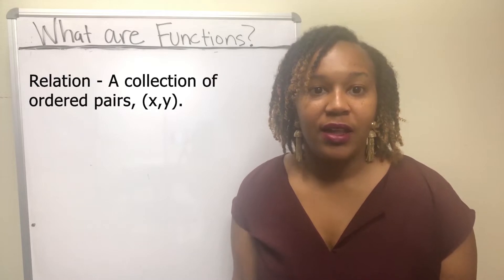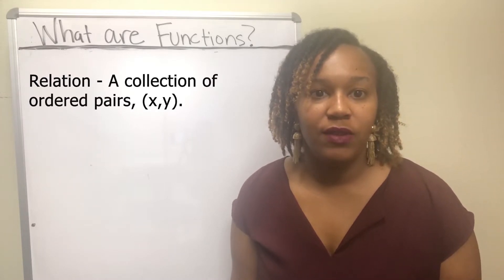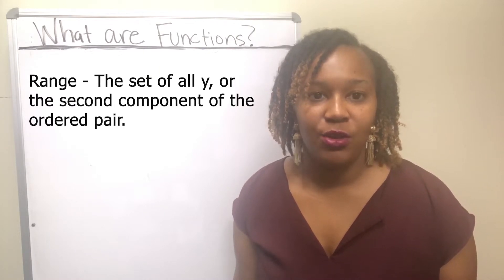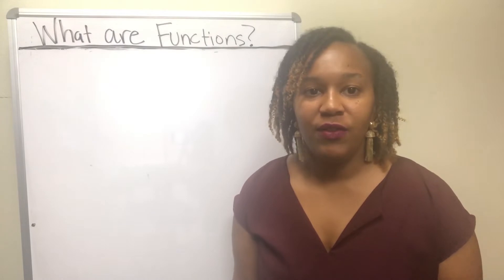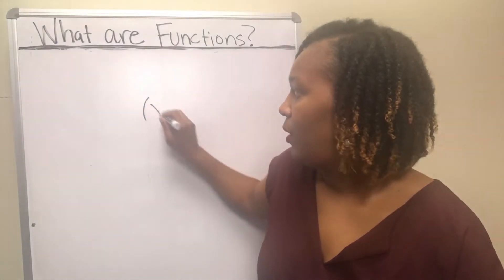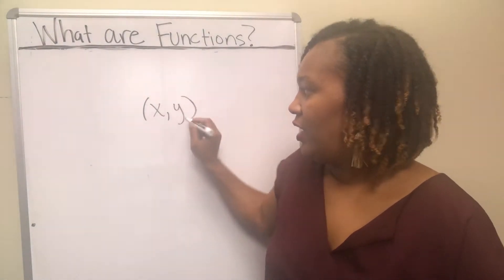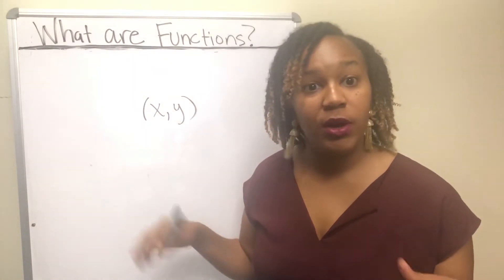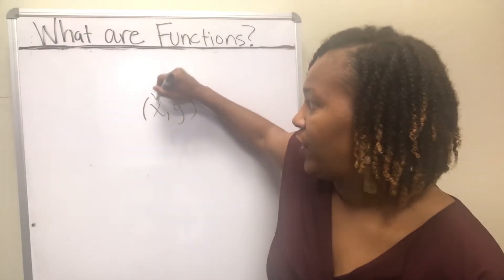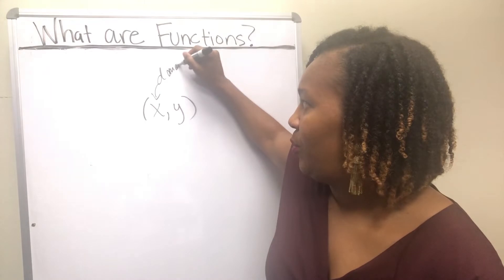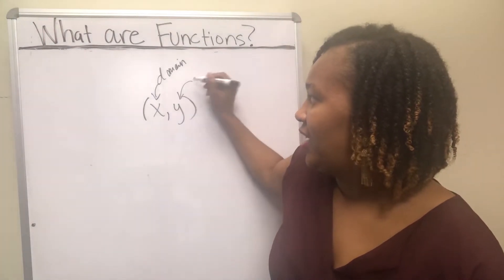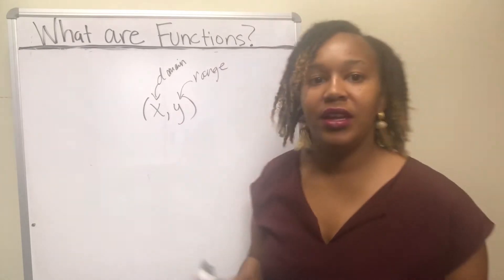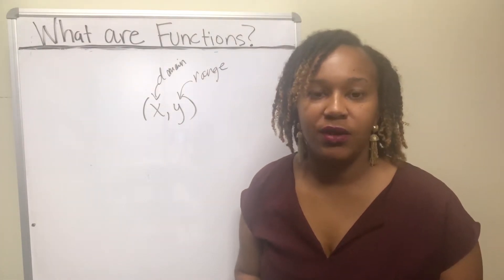The set of all the first components of the ordered pairs is the domain. And the set of all the second components of the ordered pair is called the range. So your set of ordered pairs look like this — an ordered pair is X comma Y, and you have a collection of these. The set of all the first ones is your domain, and the set of all the second elements is your range. You have to understand those first in order to understand what a function is.